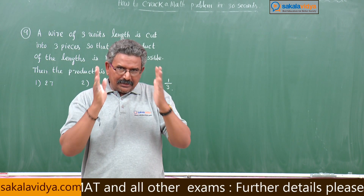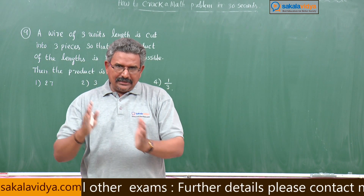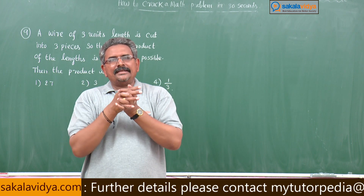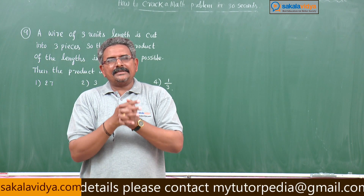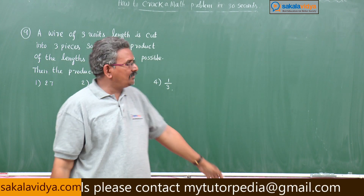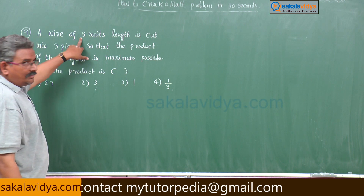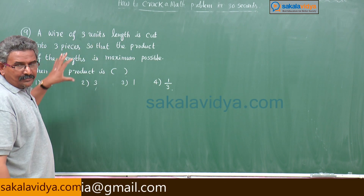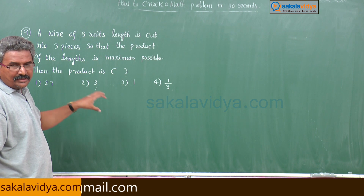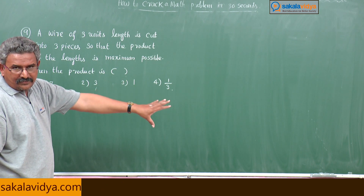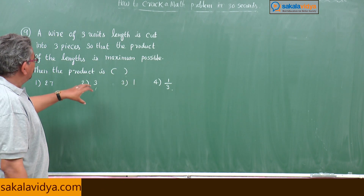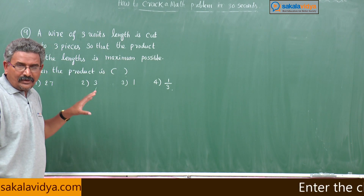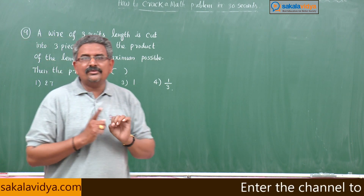Let the three pieces be x, y, z. The sum of these three pieces obviously becomes x plus y plus z equal to three units — that is, x plus y plus z is equal to a constant. If x plus y plus z equals a constant, then the maximum of x times y times z occurs when x equals y equals z.